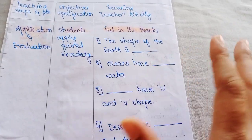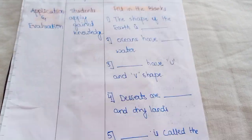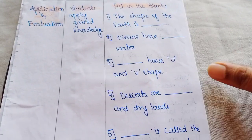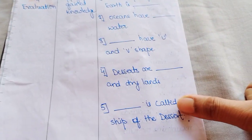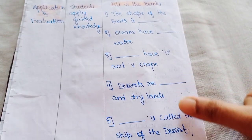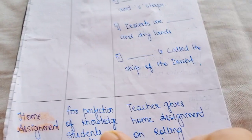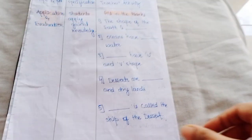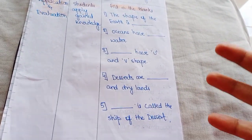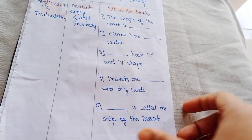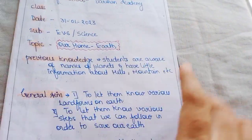Here is the last part of our lesson plan — application and evaluation. Five fill-in-the-blank questions have been added here. For home assignment, the teacher has to give home assignment to students as well, for perfection of knowledge.